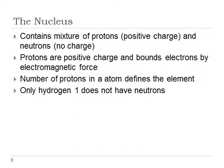So let's first talk about the nucleus. The nucleus contains a mixture of protons which are positively charged and the neutrons which have no charge. Protons are positively charged and their purpose is to bind the electrons through electromagnetic force. Essentially, the number of protons in an atom defines the element. Only hydrogen does not have neutrons. Hydrogen, not in an isotope. So hydrogen-1 does not have neutrons.